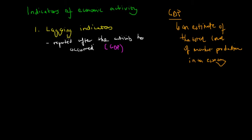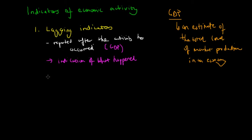Lagging indicators don't tell us what the economy is doing right now, but they give us an indication of what happened in the economy previously. This is important because economists can use historical information to develop new policies that help eliminate bad choices made in the past. Lagging indicators include GDP.